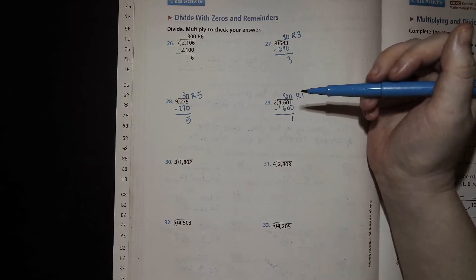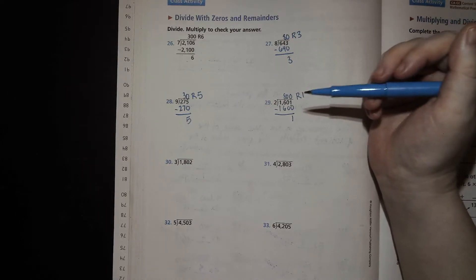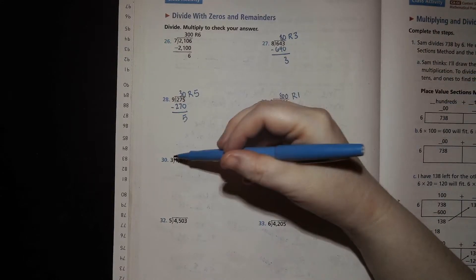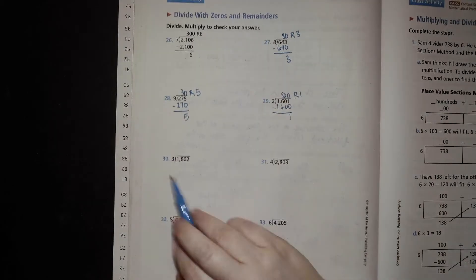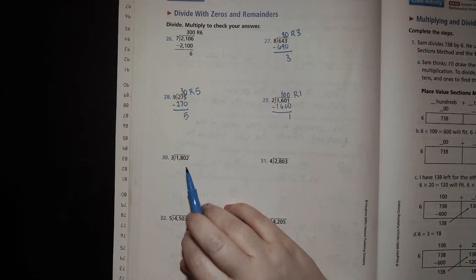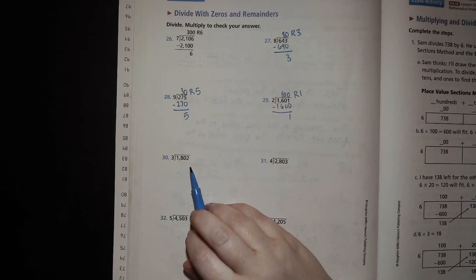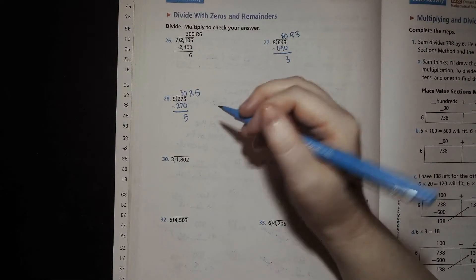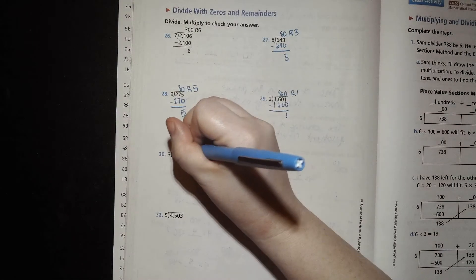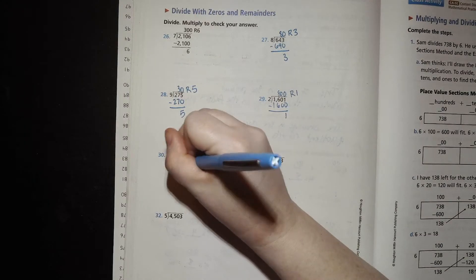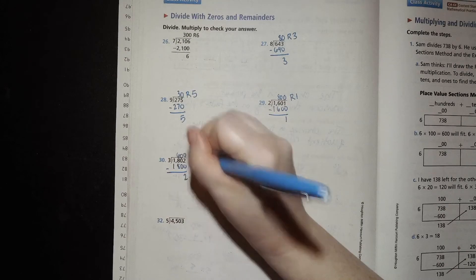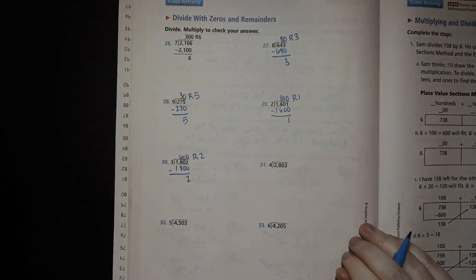Okay. 3 goes into 18002. How many times? 3 goes into 18. Or 3 times what is 18? 6. So 1800 would be 600. So put 6 in the place 18 over here. Subtract. You just have 2 left over. So remainder 2. 600 remainder 2.